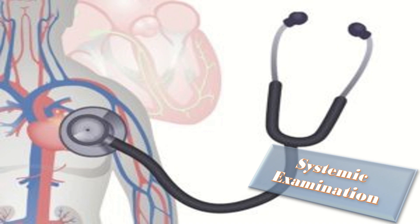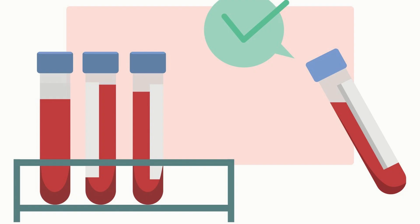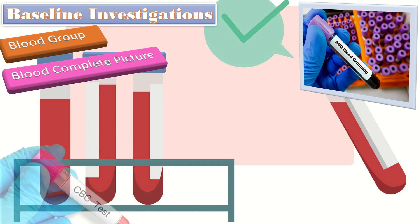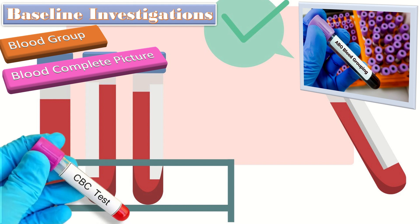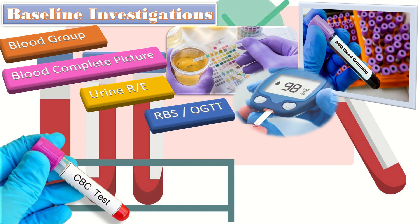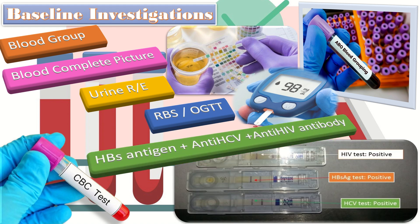Baseline investigations include: blood group and Rh factor, complete blood picture including hemoglobin, total leukocyte count, and total platelet count, urine routine examination including pus cells, proteinuria and glucosuria, random blood sugar or OGTT especially in the Asian population, HBsAg, anti-HCV, and anti-HIV antibody tests.